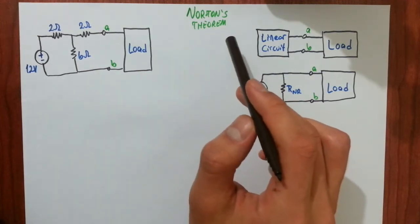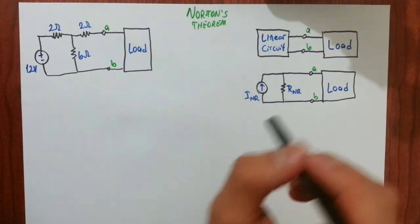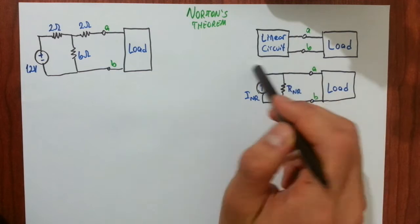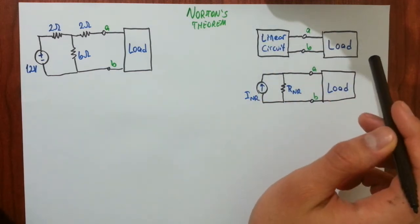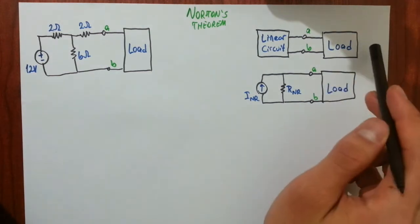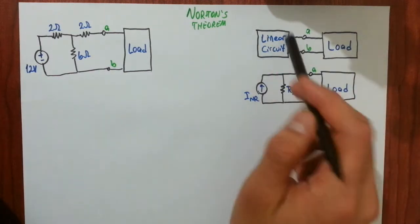It is very similar to Thevenin's theorem and most of the discussion applies also on here. Assume that you have a big circuit and while some part of your circuit remains the same, some part changes over and over and you call that part as the load. Every time you change the load, you need to analyze this whole big circuit even though this part remains the same.